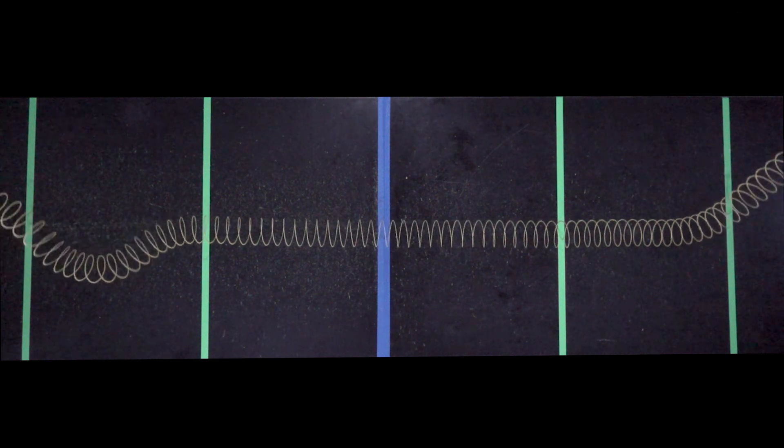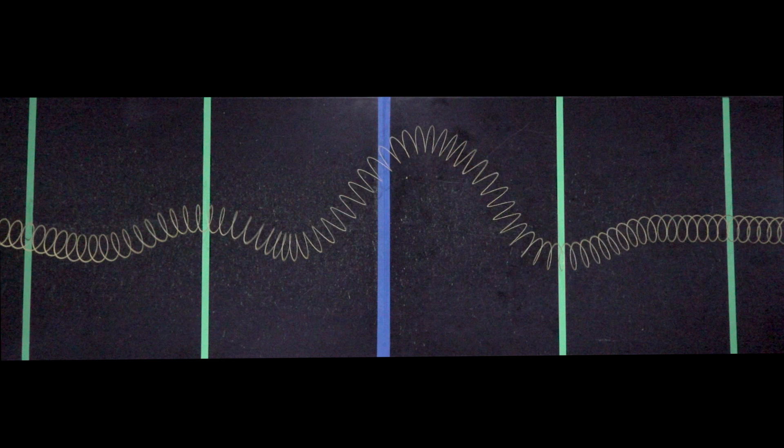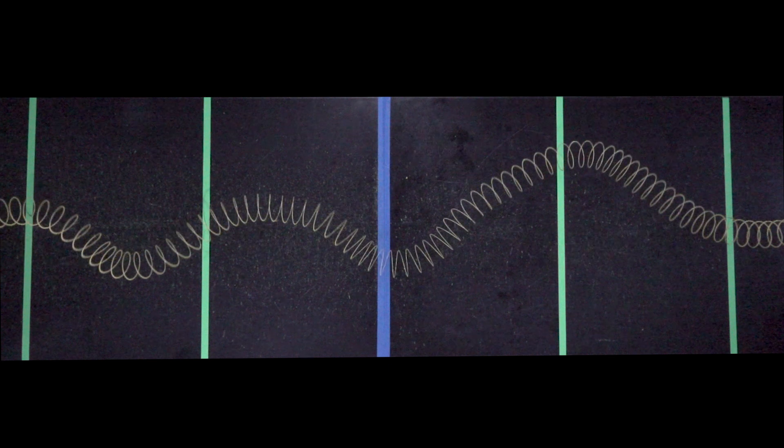When the large pulse and the small pulse are at the same location on the spring, they interfere. This means that the two pulses' amplitudes add together.